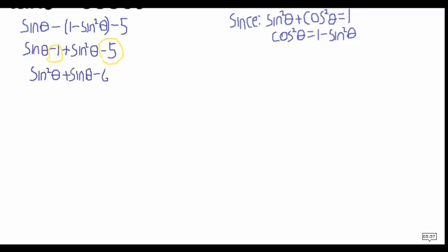I have arranged this starting from the highest power to the lowest power. As you can see, this has formed a quadratic expression which can be factorized. When factorizing, you need to find the product and the sum. Here the product is negative 6, and you need to find two numbers that multiply to negative 6 and add to positive 1 — those numbers are negative 2 and positive 3.